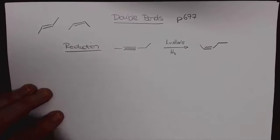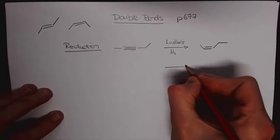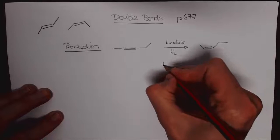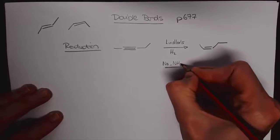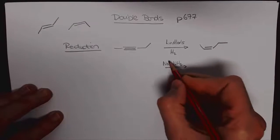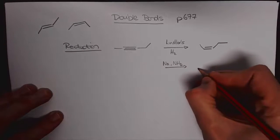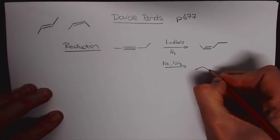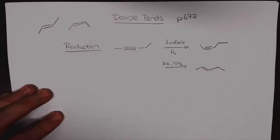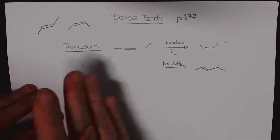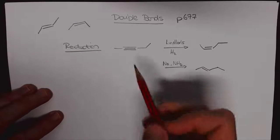Alternatively we could also reduce the alkyne under Birch conditions using sodium and liquid ammonia, so it's very cold conditions, we do a single electron reduction and what happens is we end up forming the trans alkene product. So that's one way, taking a triple bond and reducing it.